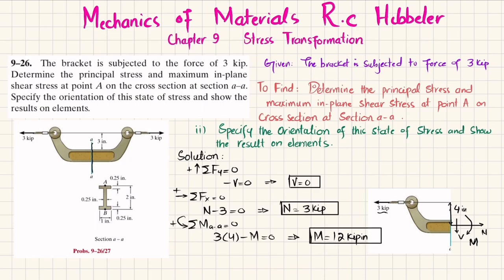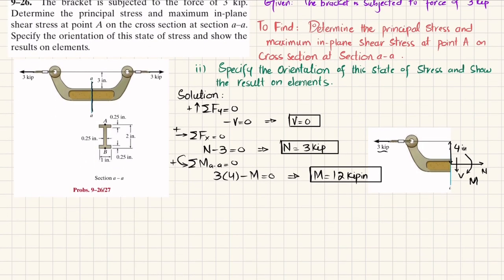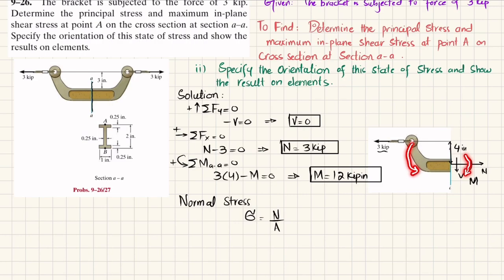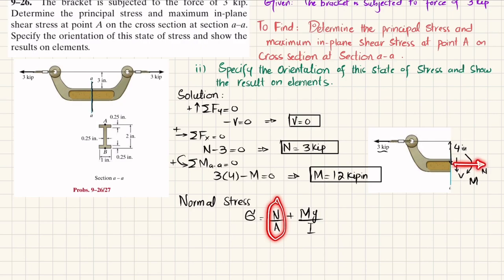Now we have all three unknowns. For normal stress, sigma is the combination of the direct normal load and the bending stress: σ = N/A + My/I. N/A is the stress due to the normal force, and My/I is the stress due to the bending moment. The upper portion is in tension while the lower is in compression.